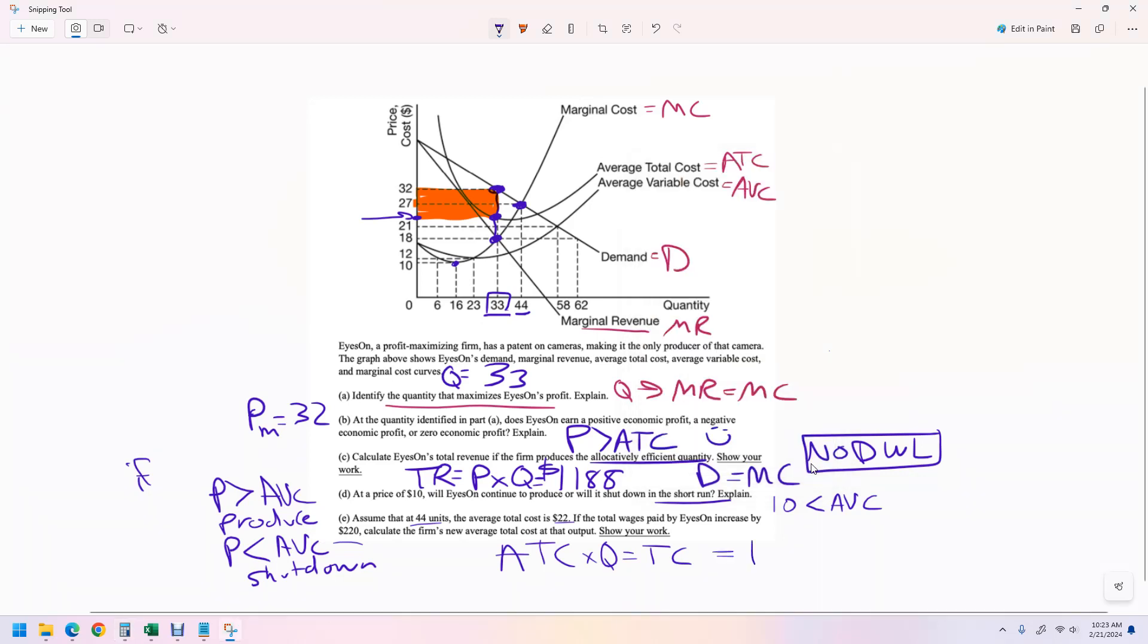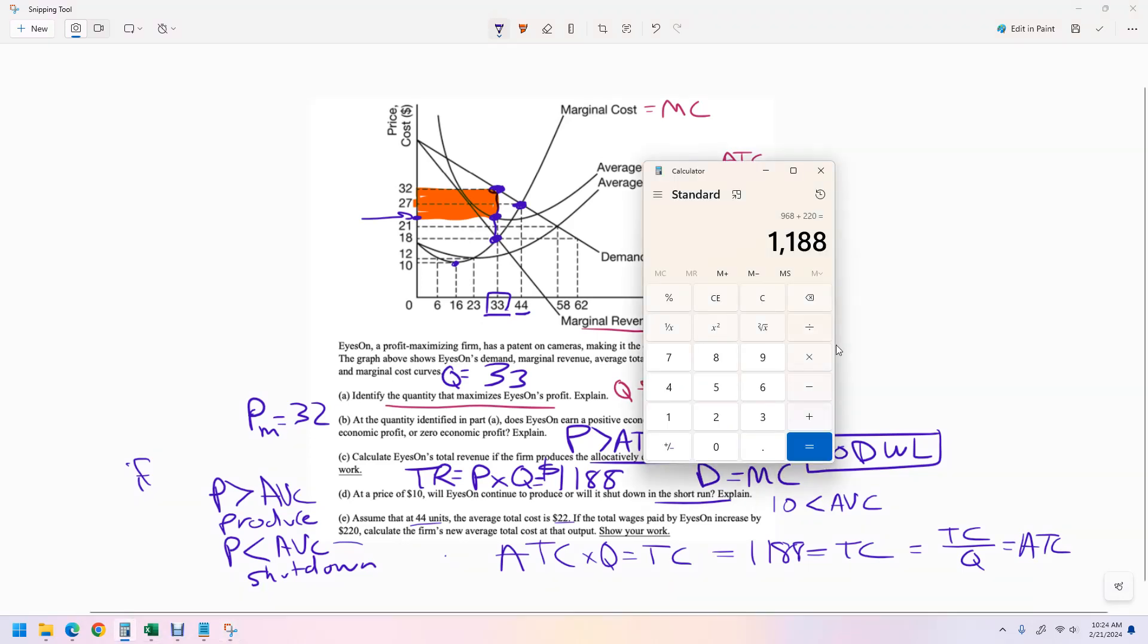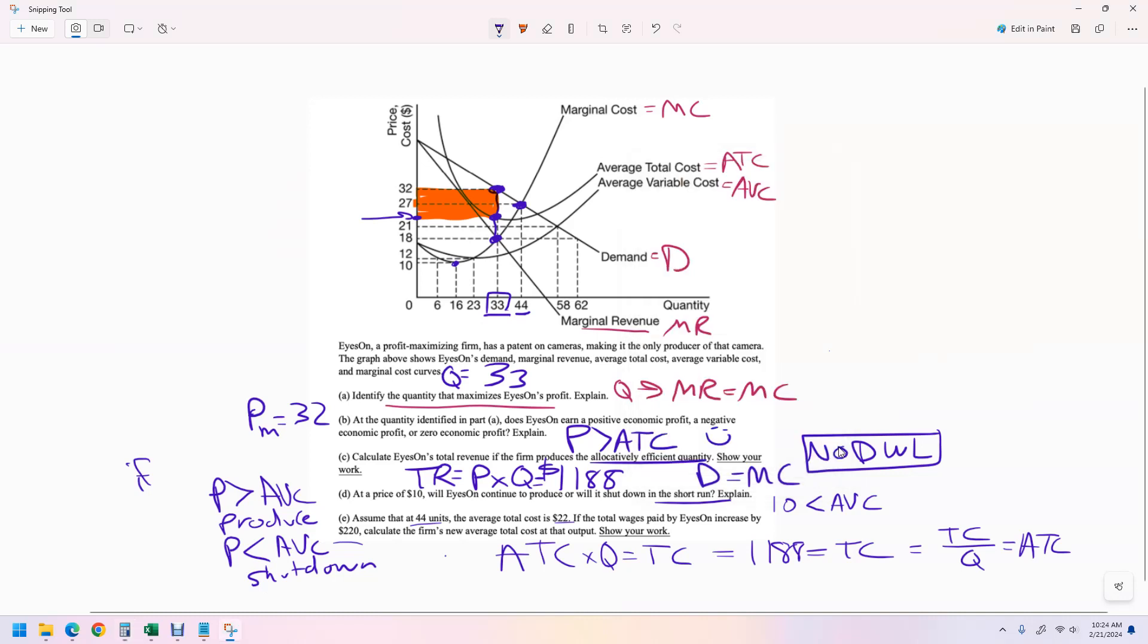So 44 times 22, and then we're just going to add 220. We get the new firm's total cost. It was 1188. And if we want average total cost, we need to divide that total cost by the quantity. That'll give us average total cost. So it'd be 1188 divided by 44, and we get 27. So then the new average total cost would be 27 for that answer.